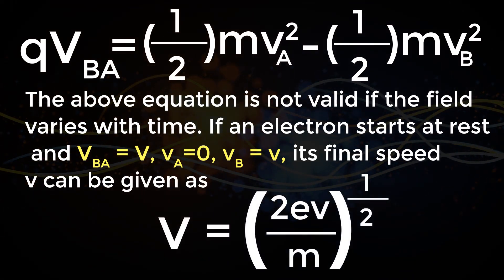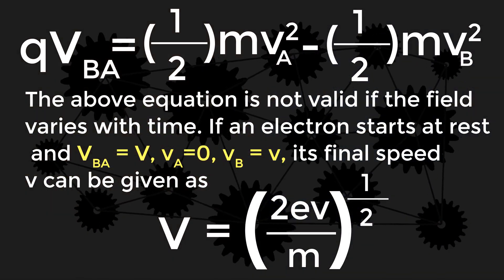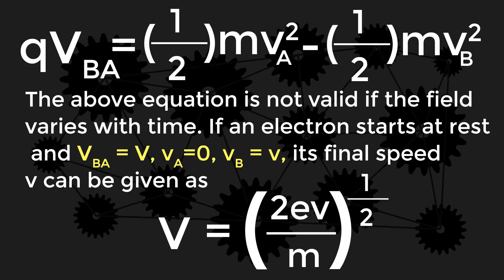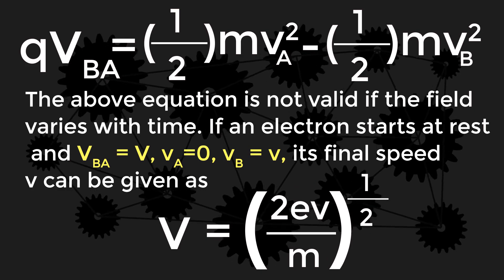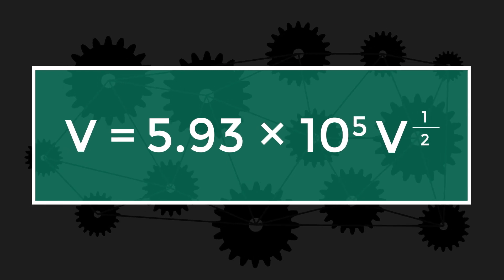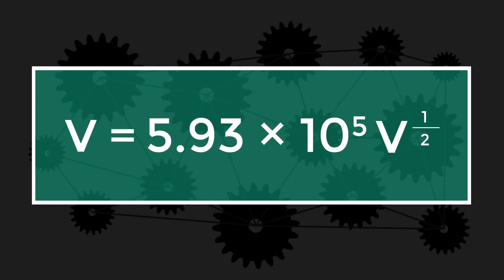If an electron starts at rest and VBA equals V, vA equals zero, vB equals V, its final speed v can be given as v equals (2eV by m) to the power of one-half, which is 5.93 times 10^5 times V to the power of one-half.